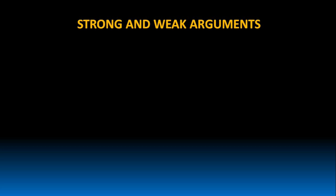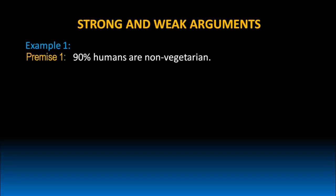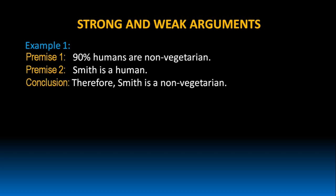Let us try to understand strong and weak arguments with the help of few examples. 90% humans are non-vegetarian. Smith is a human. Therefore, Smith is a non-vegetarian.